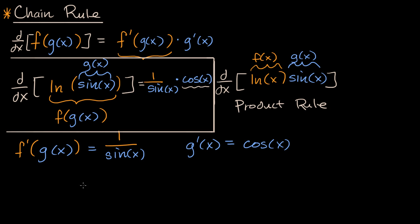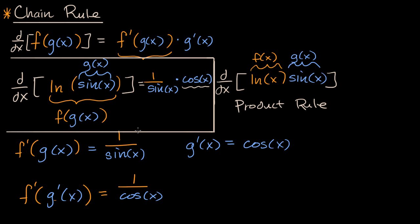Another misconception students have is that instead of applying the chain rule correctly, they take the derivative of the outer function evaluated at the derivative of the inner function — computing f'(g'(x)). Since f'(x) = 1/x and g'(x) = cosine of x, they end up with 1/cosine(x). This is not right. You do the derivative of the outside function with respect to the inside function — not its derivative — and then multiply times the derivative of the inside function.